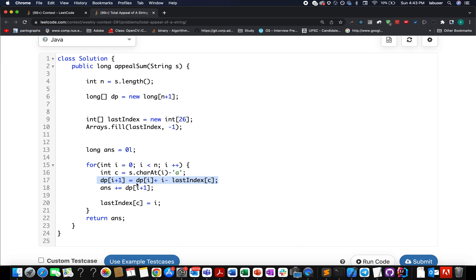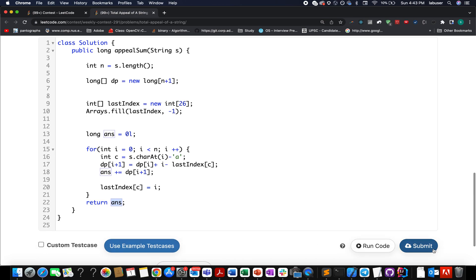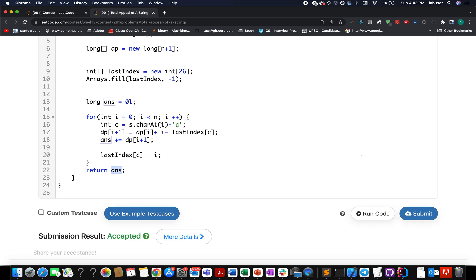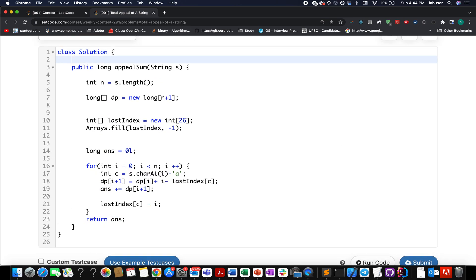I have used the exactly same equation that I talked in the presentation. So here you see dp of i plus one is equal to dp of i plus the ith index, the newly index that is being considered, minus the last occurrence of the same character. Once you have computed this value, you add it to your answer string. Also don't forget to update the last occurrence of the current character with i.